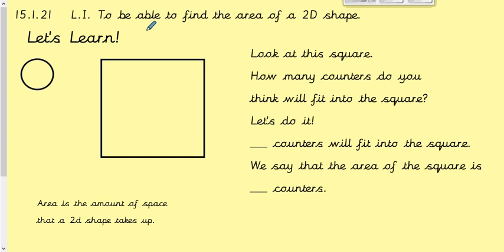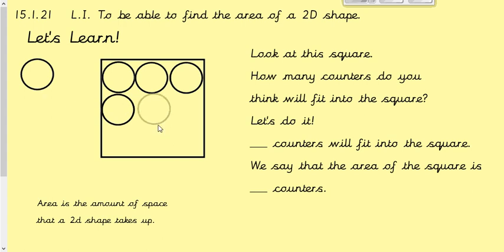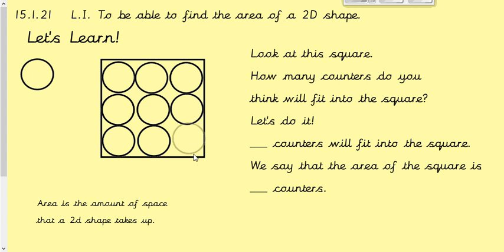Let's look at this square. How many counters do you think will fit into this square? Let's give it a go — I've got a counter here. As I do it you might want to estimate, so guess how many you think are going to fit in. One, two, three, four, five, six, seven, eight, nine — nine counters will fit into the square. We can say that the area of the square is nine counters. The area is just the amount of space that a 2D shape takes up.